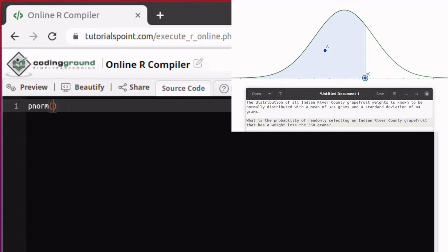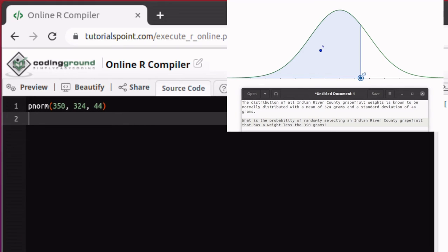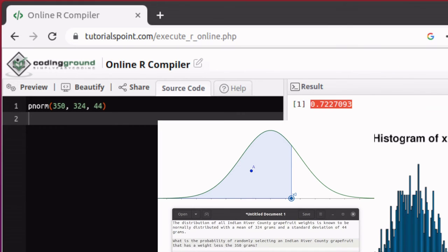That's easily done in R with the PNORM function. P stands for probability and we're looking at a normal distribution. PNORM of 350, 324 is the mean of this distribution and 44 is the standard deviation of the distribution. So R can quickly do that calculation for us. So once we ran this little script and asked for the preview, then it gave us the result over here saying that the probability is about 72%.